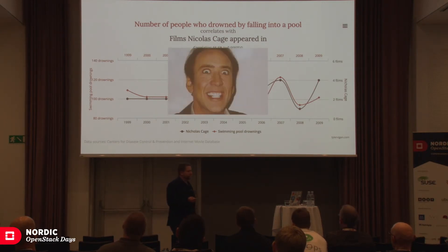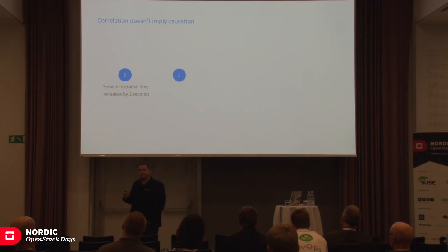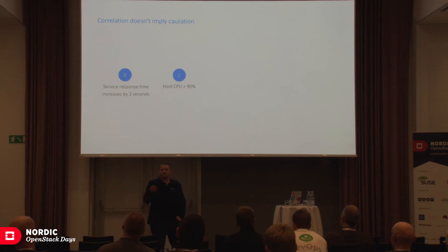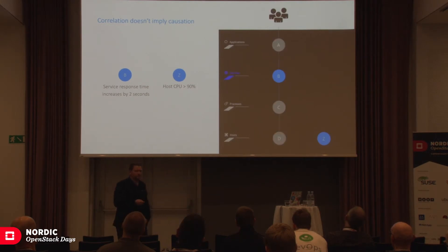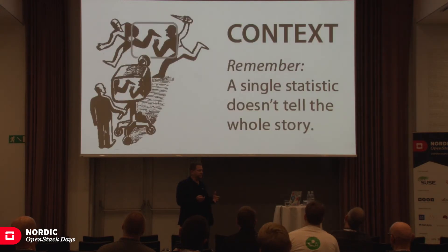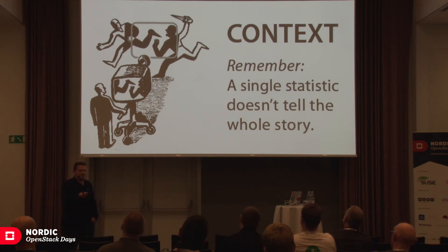Let me give you a more software engineering example. Let's say you have a service called B, and for some reason you know that the response time of this service increases by two seconds. Then there is a host where the CPU utilization spikes up by 90%. Those two things happen at the same time — they correlate. It would seem a no-brainer to say the service is slow because the CPU utilization is high. But you don't know on which host this service actually runs, so it could be a totally different service running on a totally different host with nothing in common.